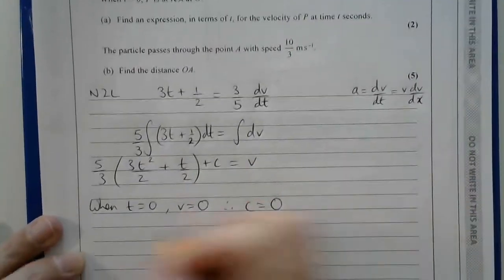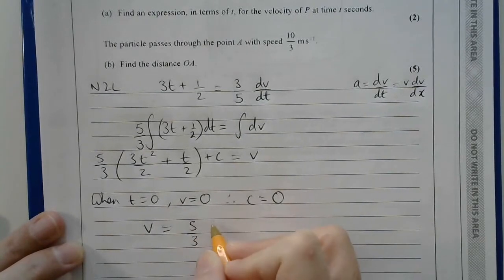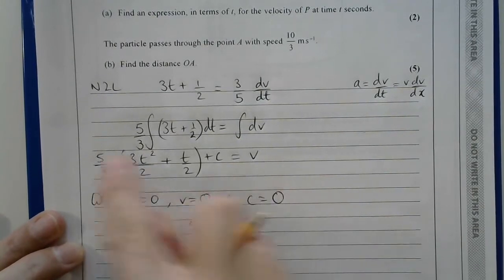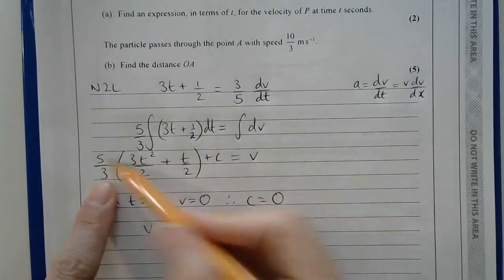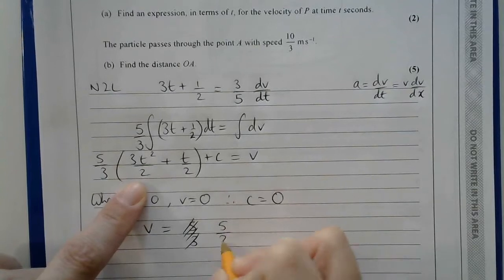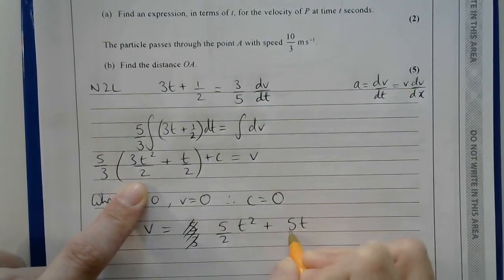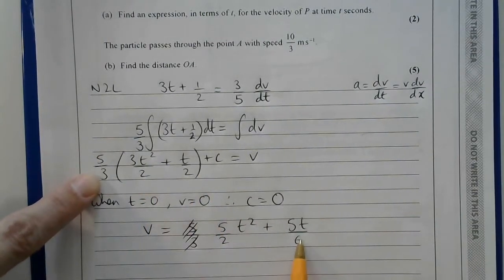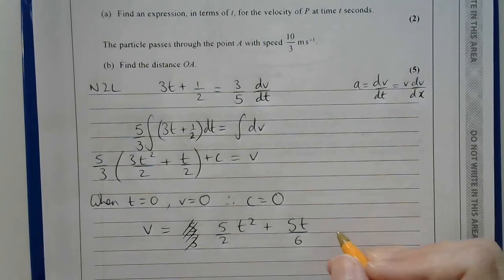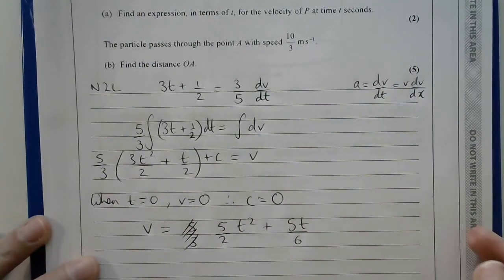They told me when t is 0, p is at rest. So that means that v is 0. So when I pop t is 0 into here, and v is 0 there, then I end up with c is 0. Therefore, v is equal to 5/3 multiplied by... Actually, I can multiply that out. So the 3s here would cancel when you end up with 5/2 t squared, plus 5t/6. And c was 0, so that is it. That is for the first two marks.